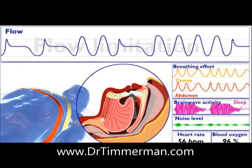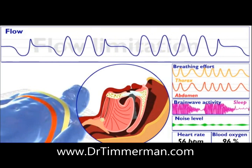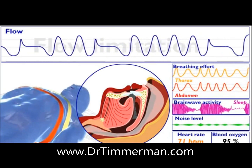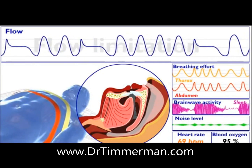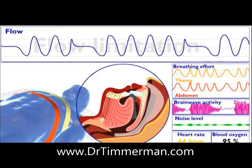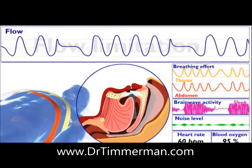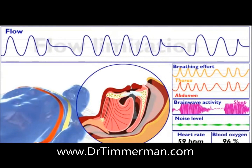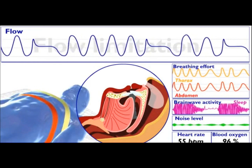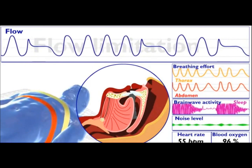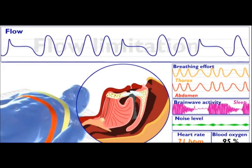This flow limitation arousal sequence may occur several times every hour. Although there may not be much change in the sounds of your breathing, your partner may notice you tossing and turning restlessly. You may wake up feeling tired. The effect on your body is strong enough to disturb your sleep and prevent you from getting the real rest you need in order to be healthy.